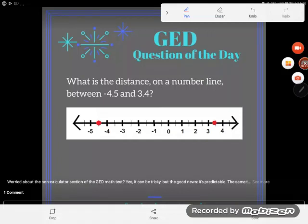It's GED Question of the Day time. Today we're looking at an absolute value style application problem that's pretty typical of what you might expect to find on the GED. The question asks: what is the distance on a number line between -4.5 and 3.4? They gave us this number line here so we can look at it.